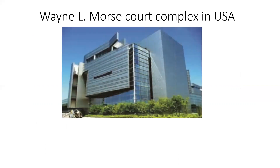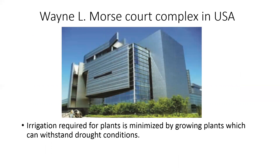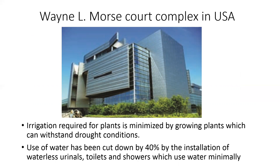Now we will refer to the Wayne L. Moss Park complex in USA. Irrigation required for plants is minimized by growing plants that can withstand drought conditions. Use of water has been cut down by 40% through the installation of waterless urinals, toilets, and showers that use water minimally.